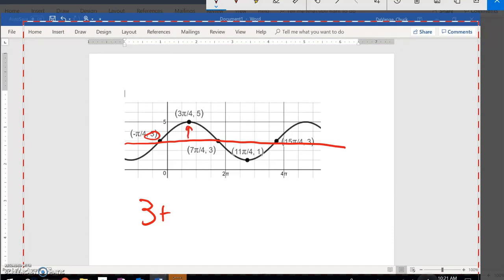so I know it's going to be 3 plus something. I notice that this offset right here from 3 up to 5 is 2, so it's plus 2. It's starting in the middle and going up, so I'm going to use sine.